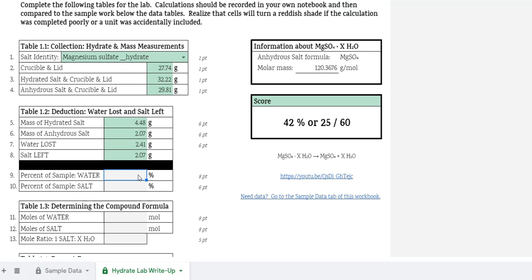We're going to have part over whole times 100% for both of them. Once we get that, we're going to insert into number 9 and number 10 our answers.